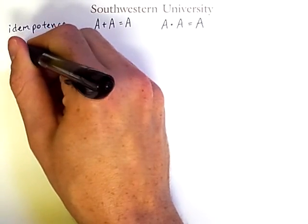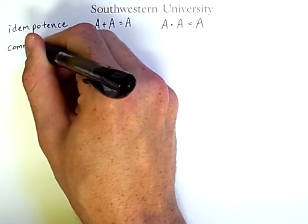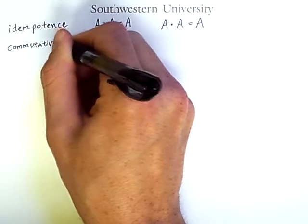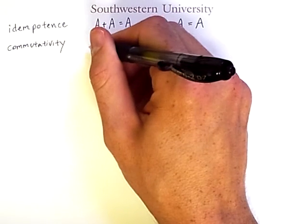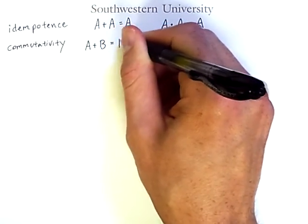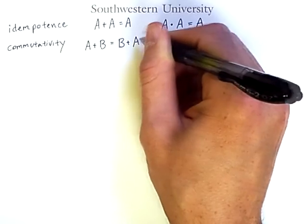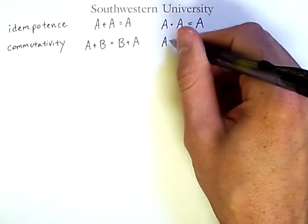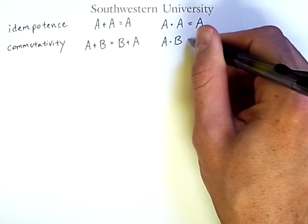Now, some of these laws have names you may be familiar with from algebra, such as commutativity. Commutativity laws indicate that the ordering of variables or expressions on either side of an operator don't matter. In other words, A or B is the same thing as B or A, and AND is also a commutative operator.